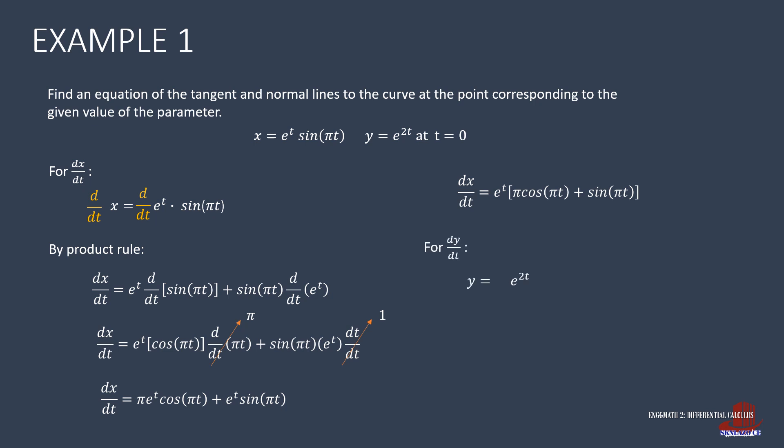Now we determine dy/dt by differentiating e^(2t). dy/dt becomes e^(2t) times the derivative of 2t, which is 2, resulting in dy/dt = 2e^(2t).